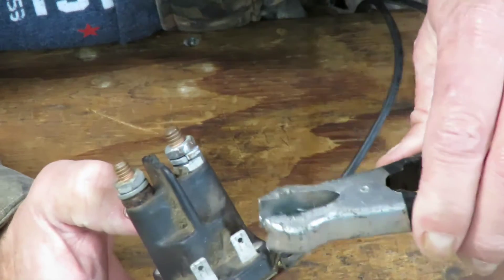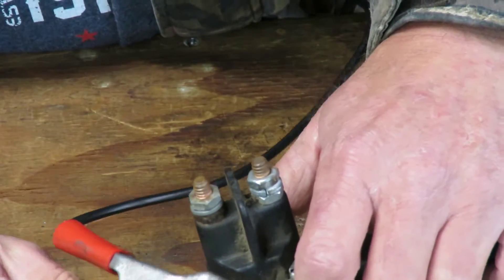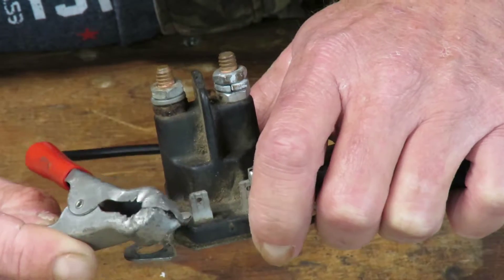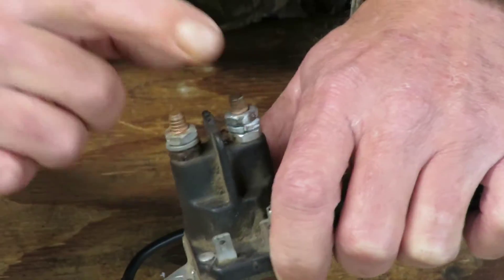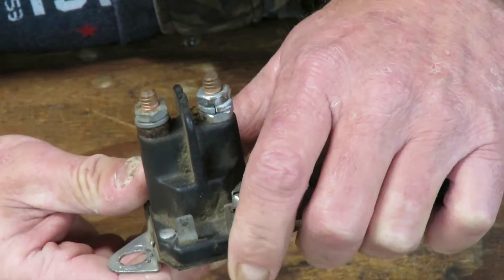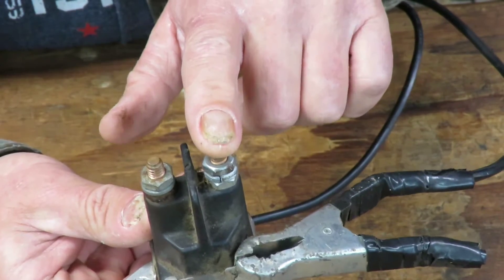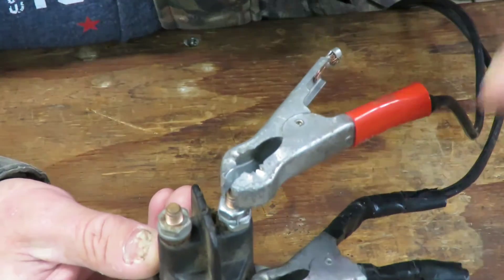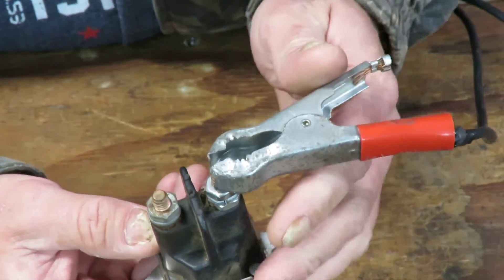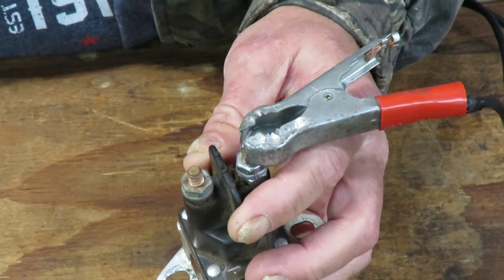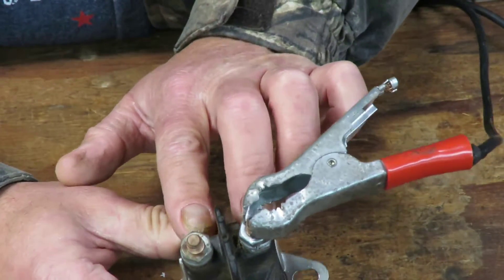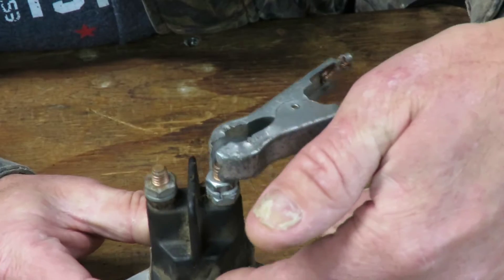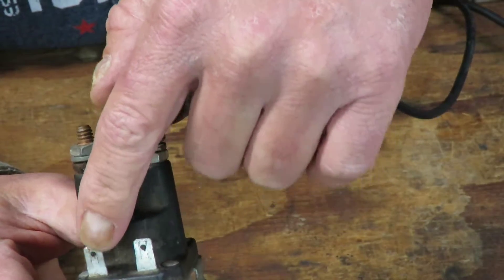So now that you think it's working because it's clicking, well that's not always the case. It may be clicking but it may not be connecting these two together inside there. That's all this does, it's like a big switch. This side comes from your battery and then the other side goes straight to your starter motor.